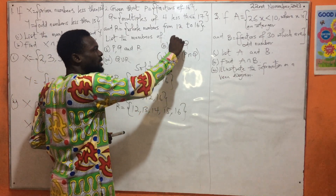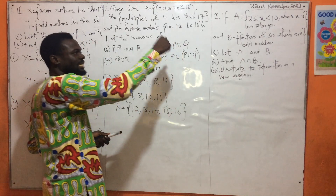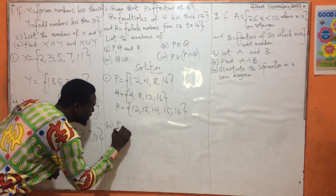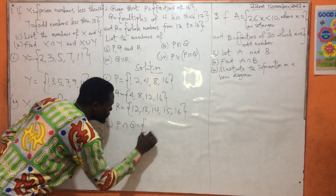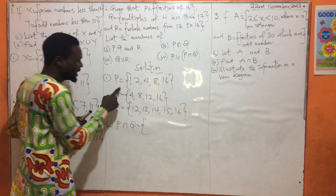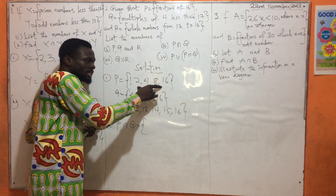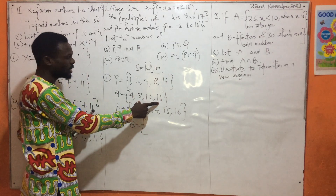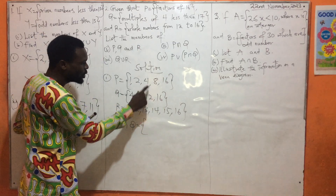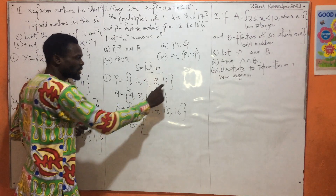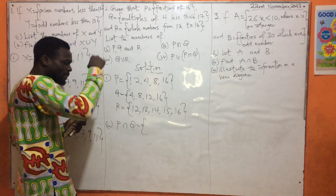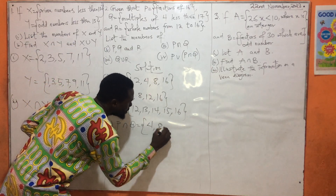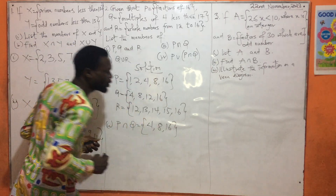Part II asks us to list the members of P intersection Q. This is P and this is Q. What can you see in P and also in Q? That gives you the intersection. Looking carefully, we can see 4, we can see 8, and we can see 16. So P intersection Q is {4, 8, 16}.